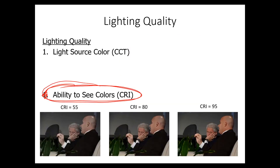Now let's talk about color rendering index — your ability to distinguish colors. The color rendering index goes from a scale of 0 to 100. It was established based on the incandescent lamp for interior lighting, so 100 is not the absolute best; outdoor lighting under bright sun conditions would be better than that. At a color rendering index of 55, the picture looks just kind of gray. As you get closer to 100, you're getting more reds, and really close to 100, you can really see the reds, hues, and face tones.